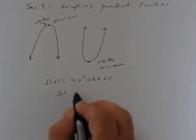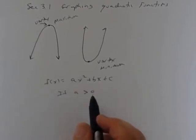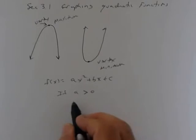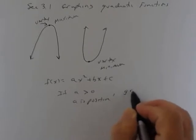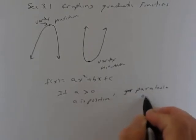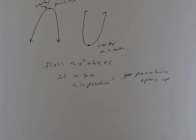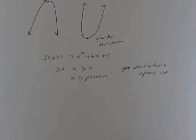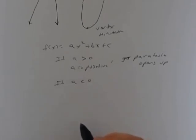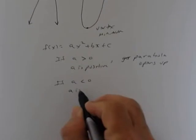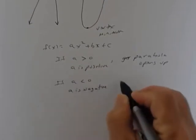If a is greater than zero — meaning a is positive — the graph is going to open up; the parabola opens up. So just knowing what a is can tell you whether it opens up or down, and at some point it can tell you whether you have x-intercepts or not. If a is less than zero — meaning a is negative — the parabola is going to open down.